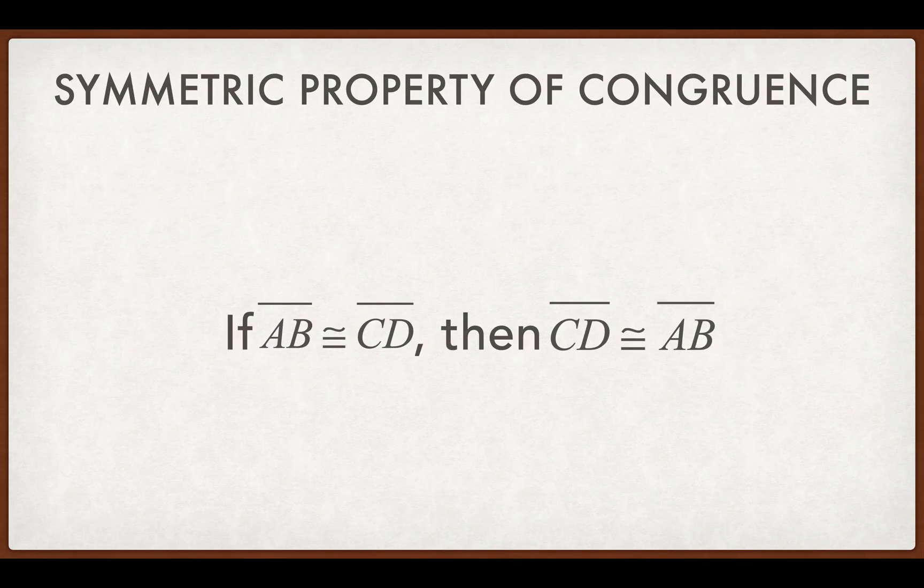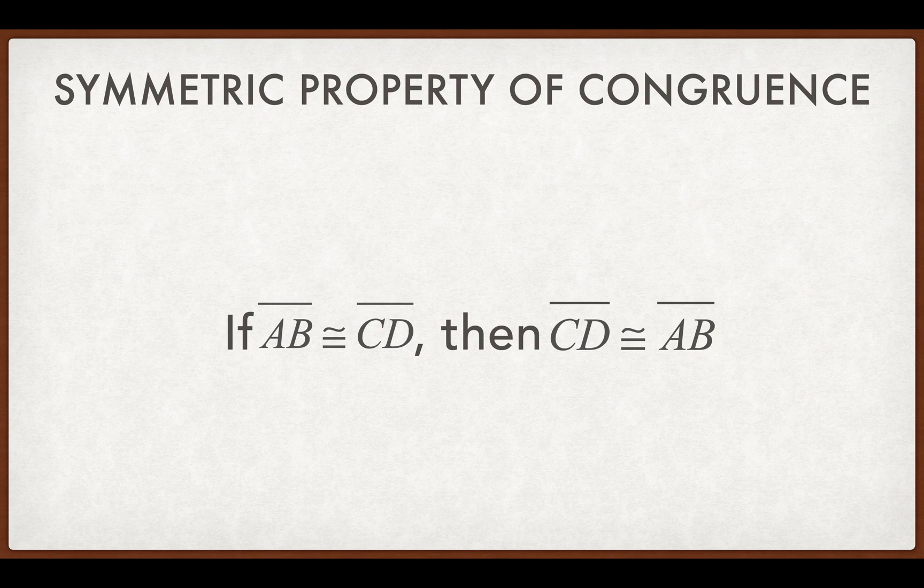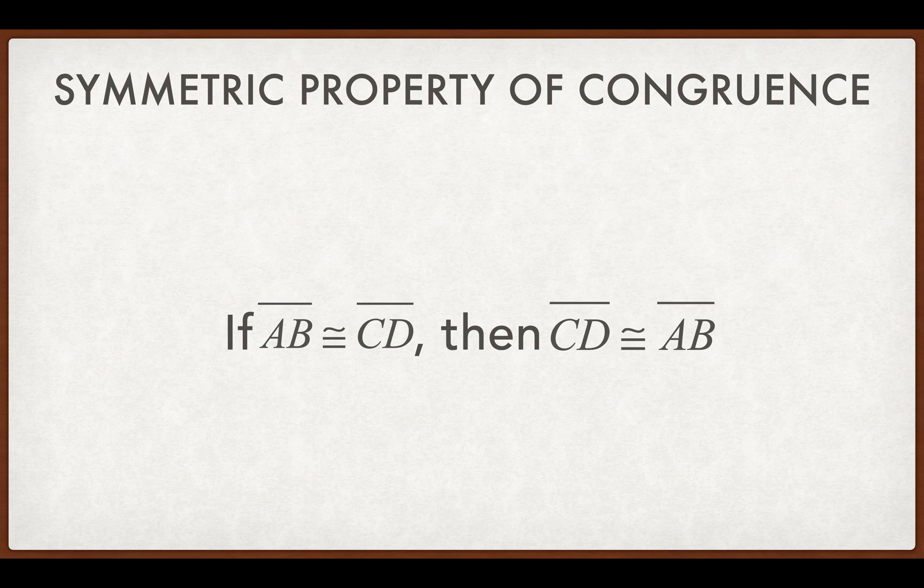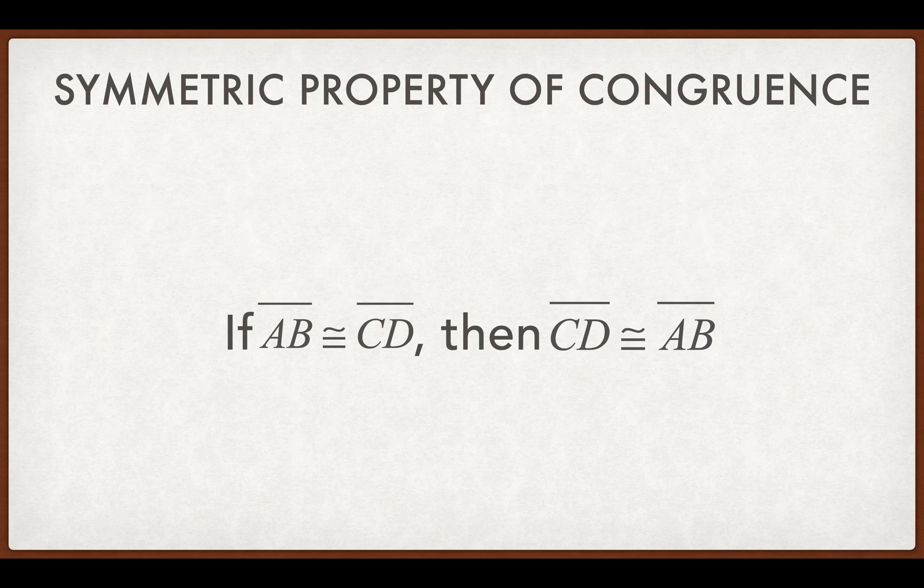Next, we have the symmetric property of congruence. So, in this case, if I have two line segments, if I say line segment AB is congruent to CD, so they both have the same length, then CD has the same length as AB. If this seems really obvious to you, that's because, once again, these are the properties. These are the things we don't have to prove.